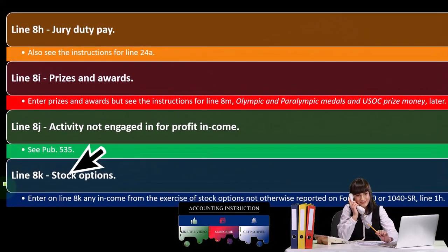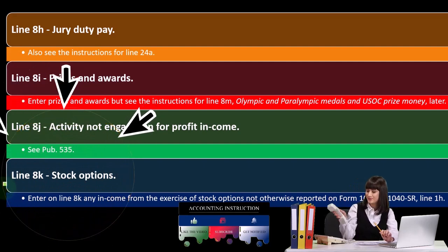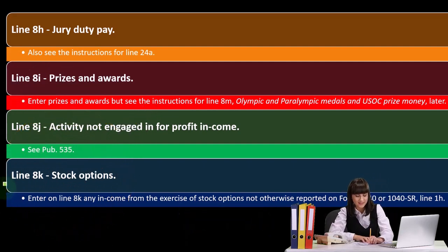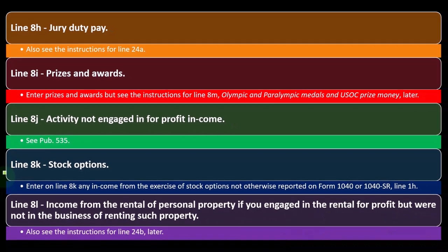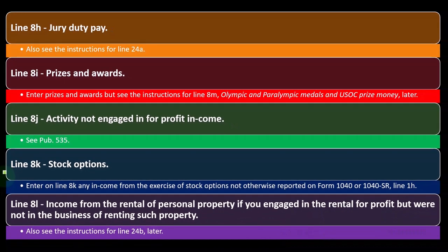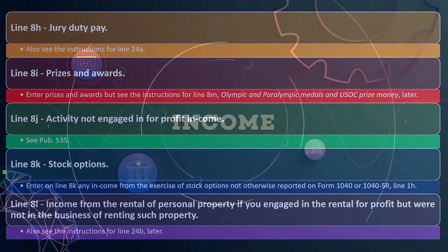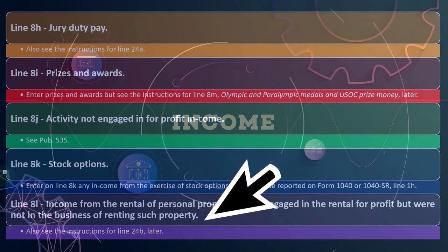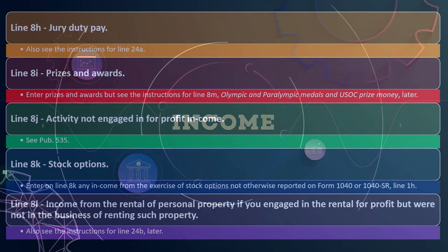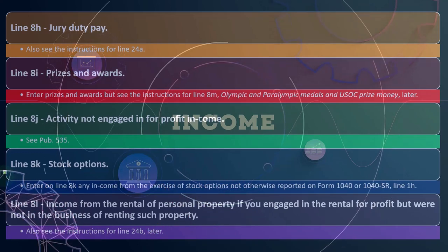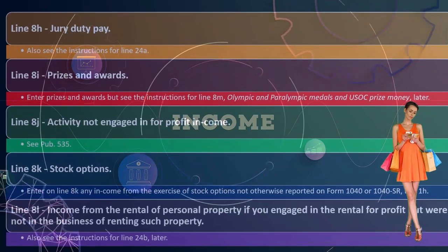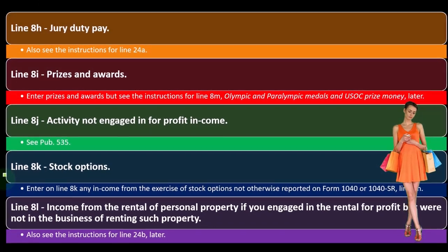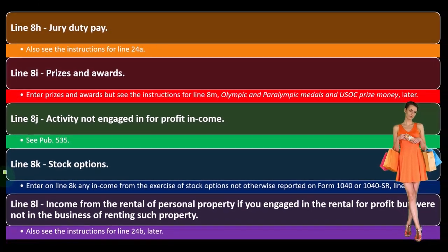Line 8k — stock options. Enter on line 8k any income from the exercise of stock options not otherwise reported on Form 1040 or 1040-SR, line 1h. Line 8l — income from the rental of personal property, if you engaged in the rental for profit but were not in the business of renting such property. See the instructions for more detail, including line 24b.